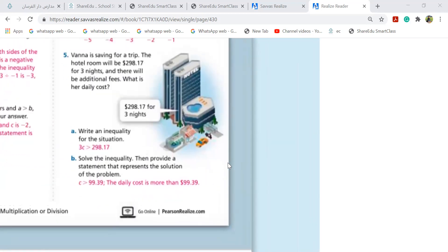First question, please read it out. Fifth question, number five. Noor, read this out, question number five. Vanna is saving for a trip. The hotel room will be $298.17 for three nights, and there will be additional fees. What is her daily cost? So write an equality solution for the situation. Vanna is saving for a trip. The hotel room, imagine like we are going for a trip. The total amount is $298, and then for three nights. So one night, I don't know. Daily cost, I don't know. So I'll say 3C.